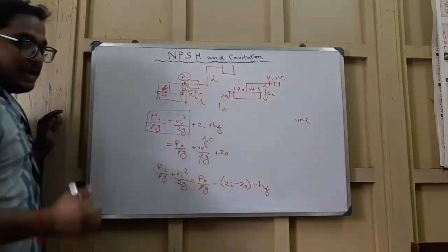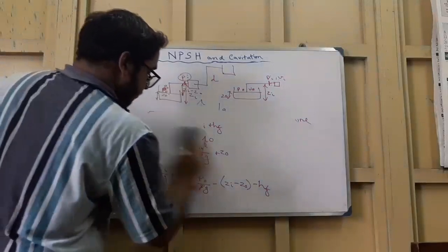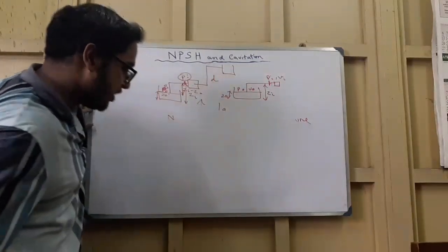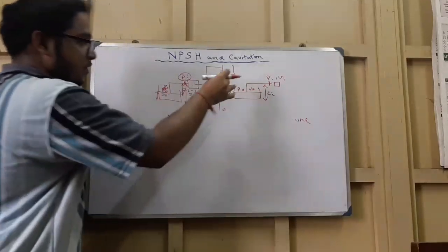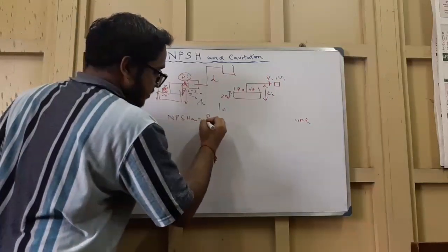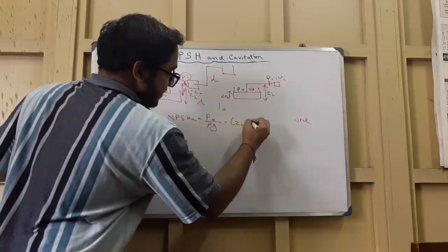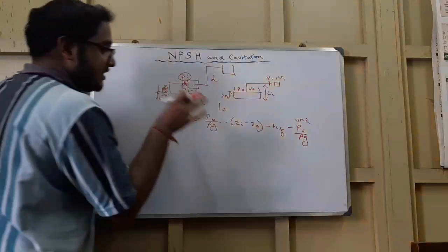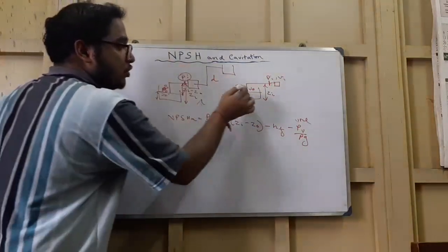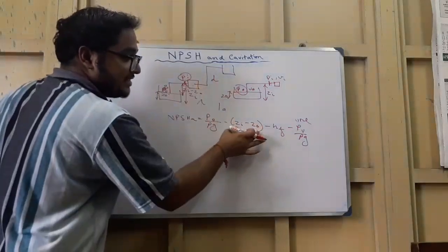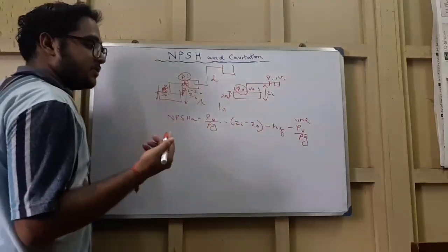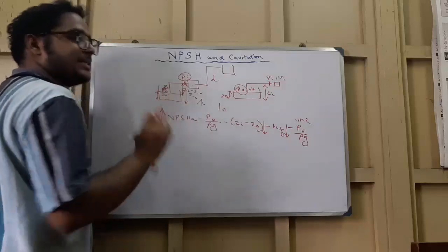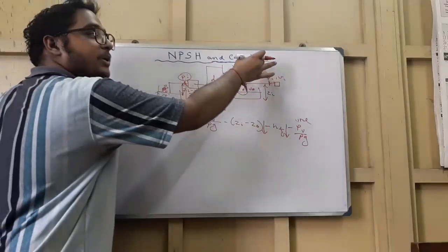Rearranging, we get: PI/ρg + VI²/2g = P0/ρg − (ZI − Z0) − HF. Substituting into the NPSH Available expression: NPSH_A = P0/ρg − (ZI − Z0) − HF − PV/ρg. We have now expressed NPSH in terms of reservoir pressure P0, the gravitational head difference (ZI − Z0), the frictional losses HF, and the vapor pressure PV/ρg. To keep NPSH high, these losses must be kept as low as possible.